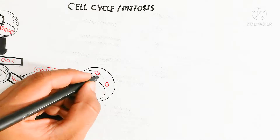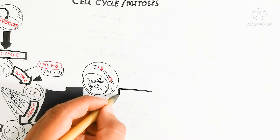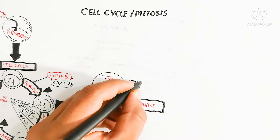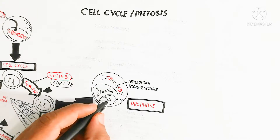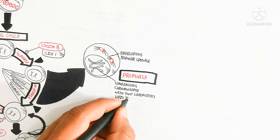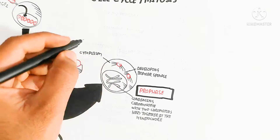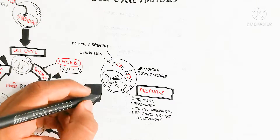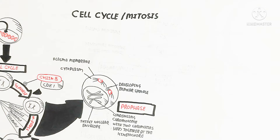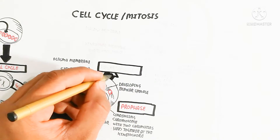Now let's understand the M phase — the mitotic phase. The first steps are prophase, metaphase, anaphase, and telophase. Prophase involves preparation: after G2, the chromosomes condense into two chromatids held together by a centromere. Kinetochores are present inside the centromere. The plasma membrane, cytoplasm, and bipolar spindle are developing. The two developing bipolar spindles each contain two centrioles.